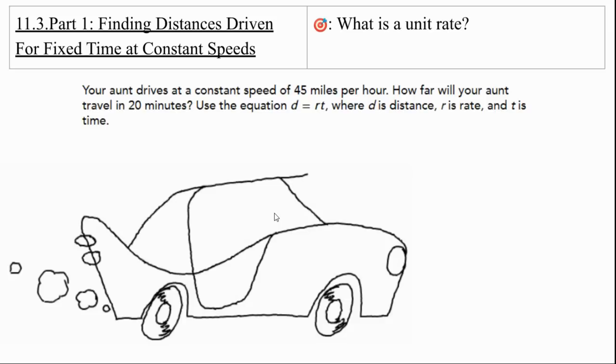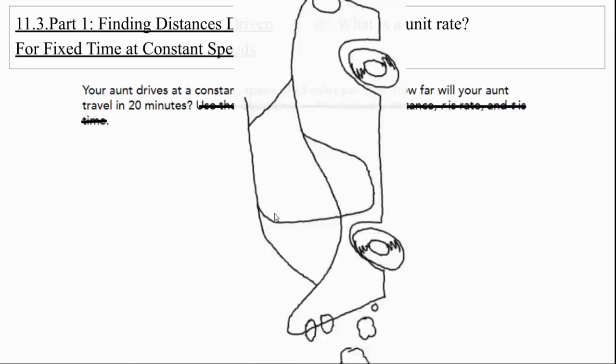We're going into part one. So finding distances driven for a fixed time at constant speeds. Your aunt drives at a constant speed of 45 miles per hour. How far will your aunt drive in 20 minutes? And here we go. The first thing that they throw at us is using that equation. But you know what? We're just going to say no. We're not going to use the equation.